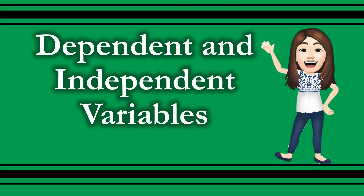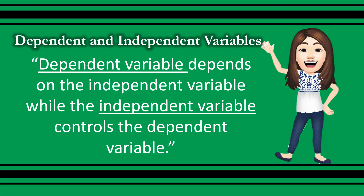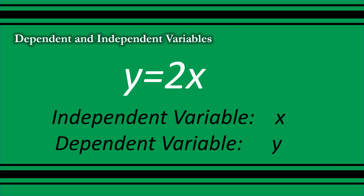Now let us proceed with determining dependent and independent variables. The dependent variable depends on the independent variable, while the independent variable controls the dependent variable. In this given, y = 2x: the independent variable is x and the dependent variable is y, since y depends on the values of x. If x is 0, then y is 0. If x is 1, then y is 2. If x is 3, then y is 6.